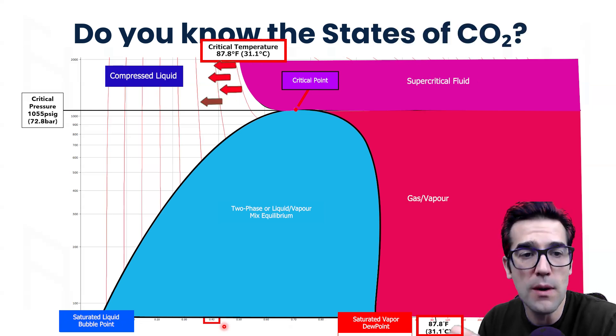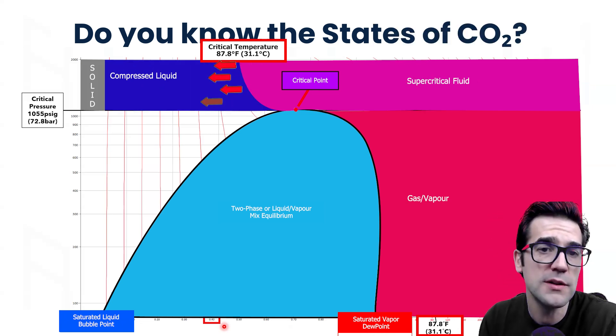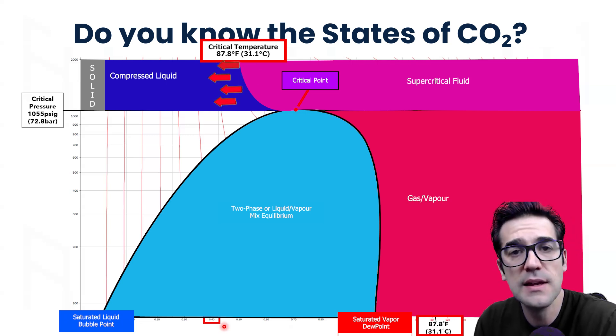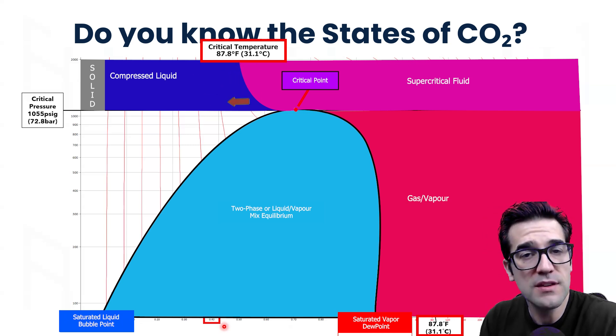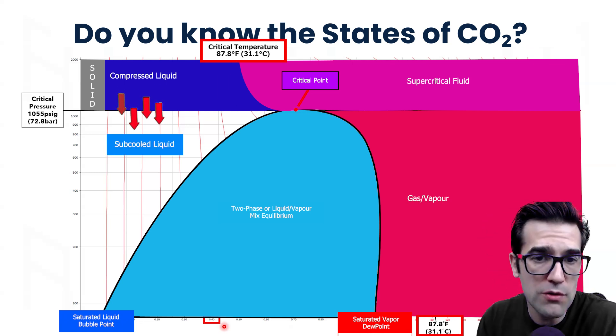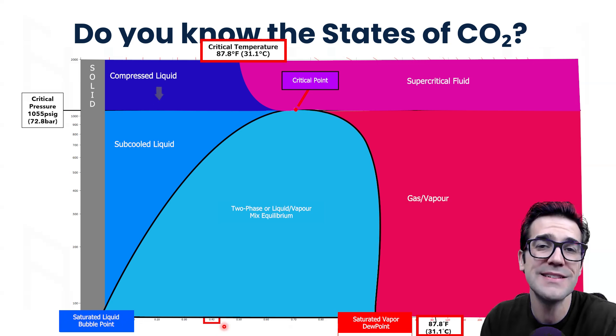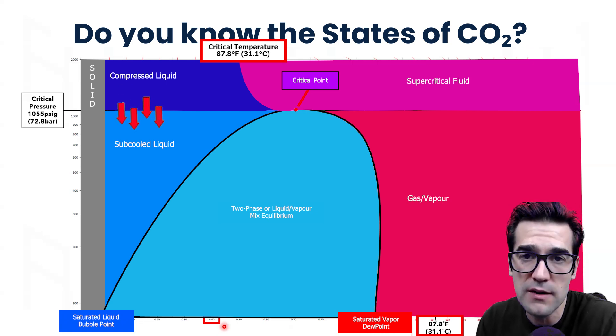From there, when we're above the critical pressure but below the critical temperature, we're a compressed liquid. This is very important. You'll see this a lot in CO2 extraction. Very important to understand, because when we're below the critical pressure, it's a subcooled liquid. They are different.